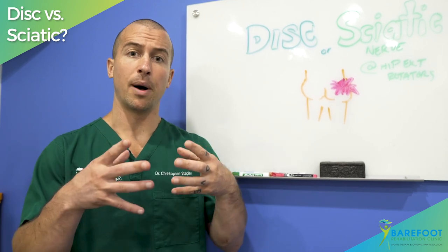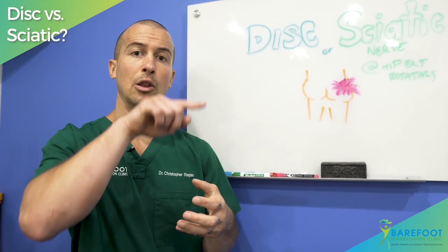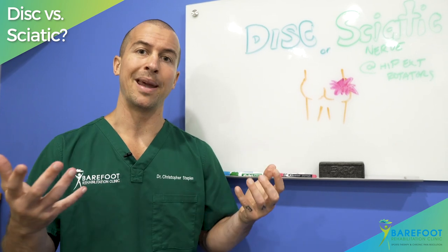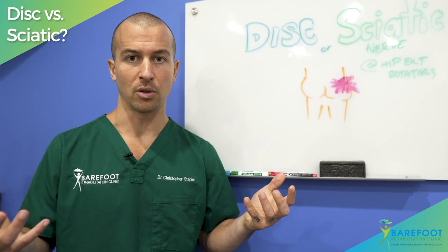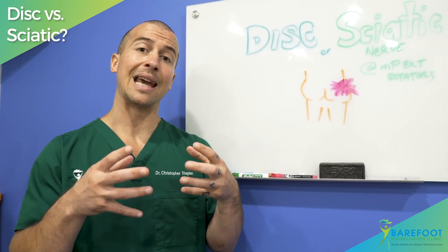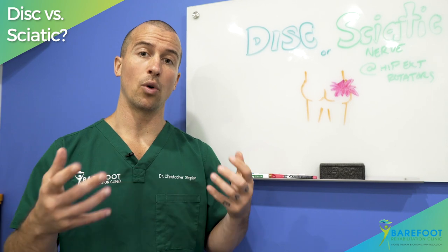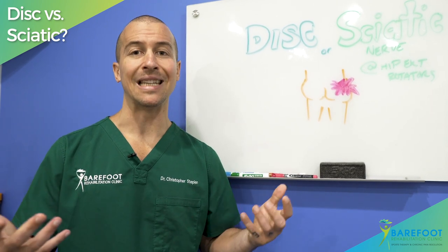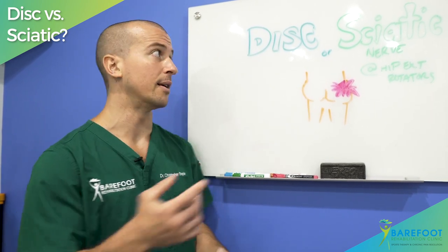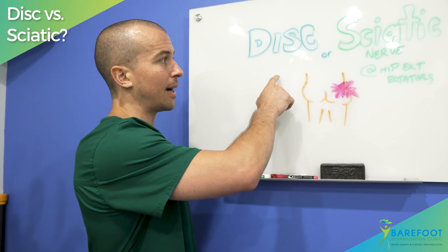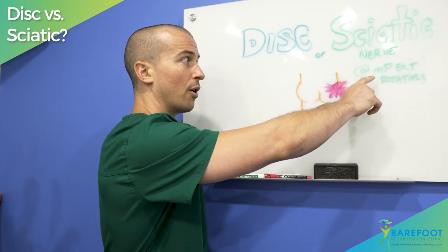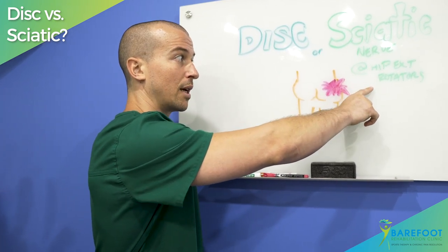When all the puzzle pieces are put together, we can look at what the puzzle looks like and make sense of what it is. So you just have to put this data together in order to come up with the best idea of whether your butt pain is being caused by a disc or by the sciatic nerve at the hip external rotators.